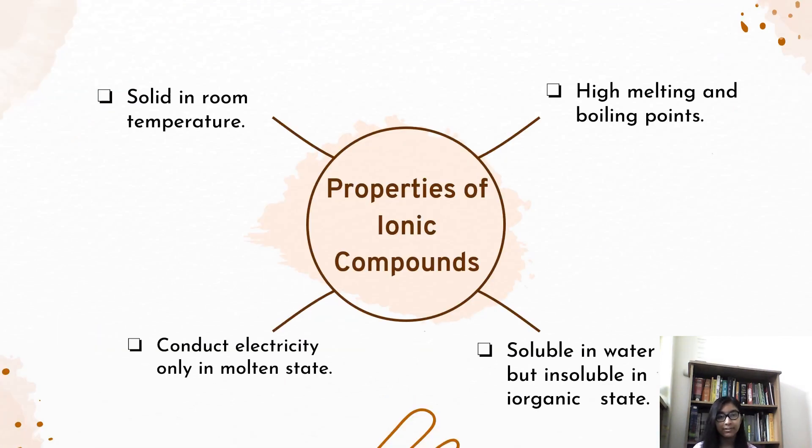Properties of ionic compounds. Ionic compounds are solid in room temperature and they have high melting and boiling points. They conduct electricity only when they are in the molten state and are unable to do so when they are in solid state. They are soluble in water, but insoluble in inorganic solvents.